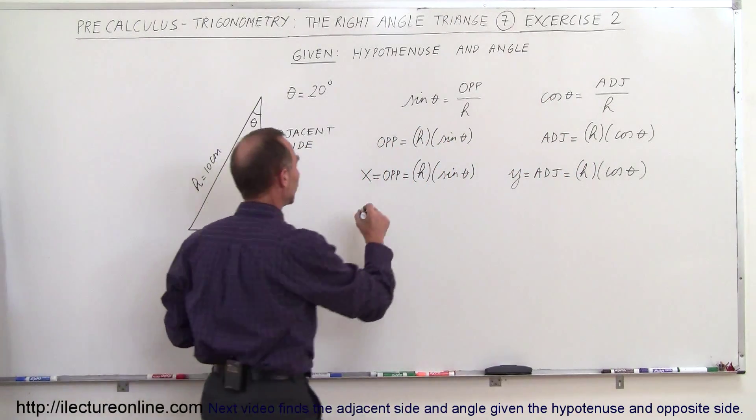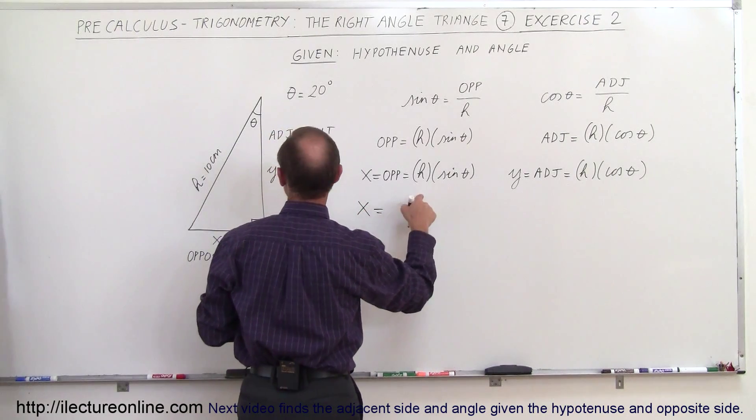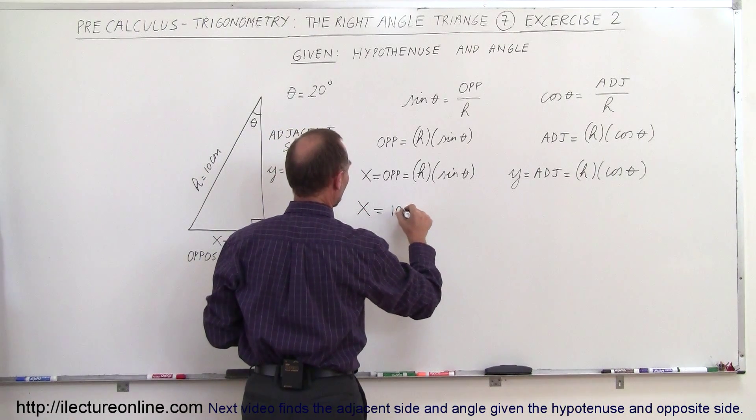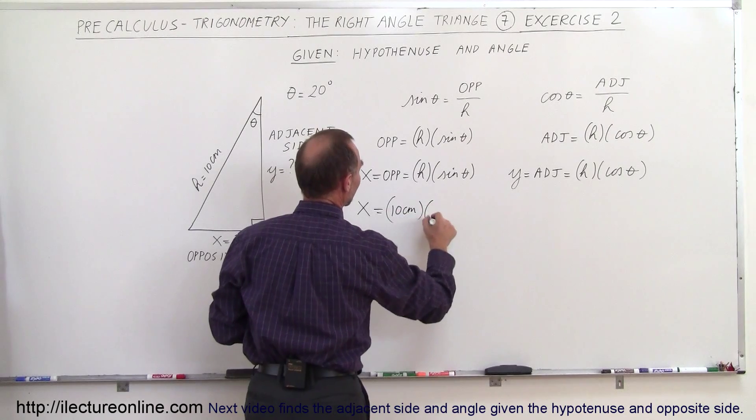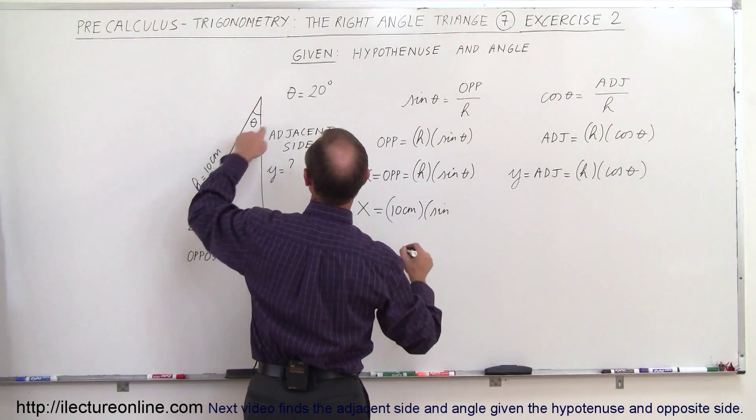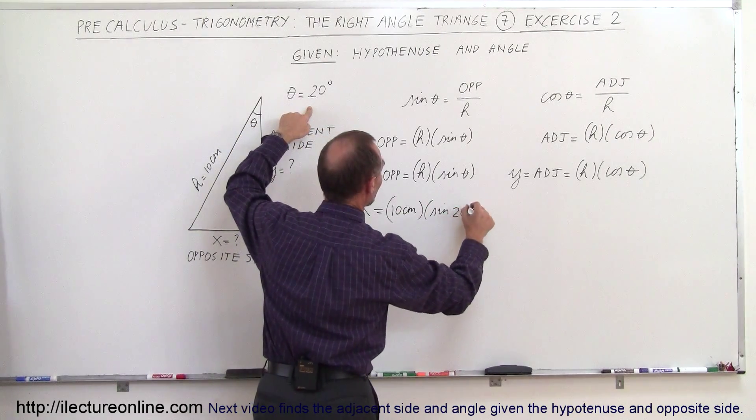So now we just have to plug in the numbers so therefore x is equal to H which is 10 centimeters times the sine of the angle and we said the angle is 20 degrees, the sine of 20 degrees.